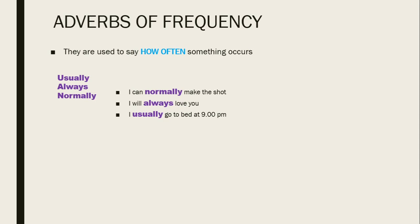Next, we're going to go with adverbs of frequency. They are used to say how often something occurs — basically, with what frequency something happens. This is a reminder of what you saw when studying the Simple Present, talking about how often you do a routine. Here we have three examples: usually, always, and normally. Example sentences: 'I can normally make the shot.' 'I will always love you.' 'I usually go to bed at 9 p.m.'